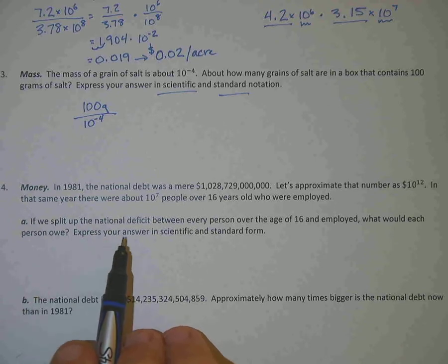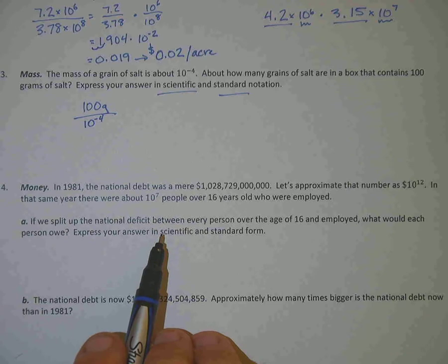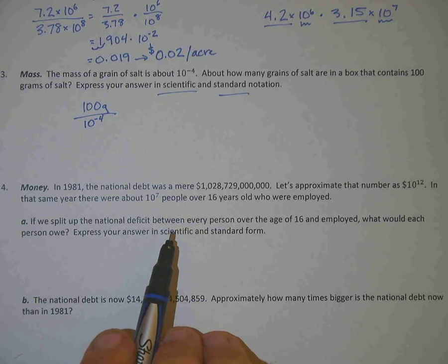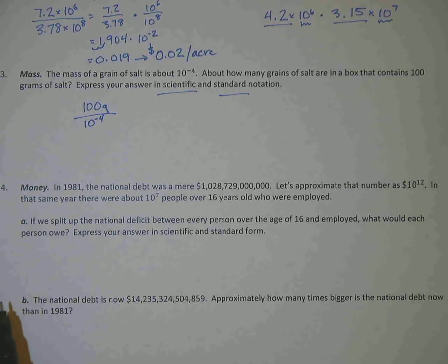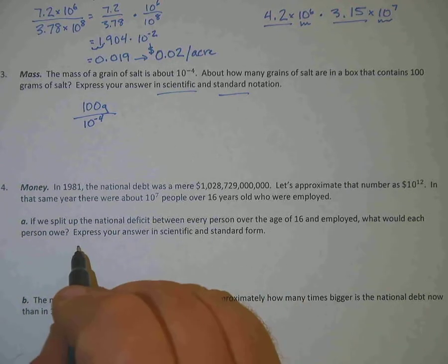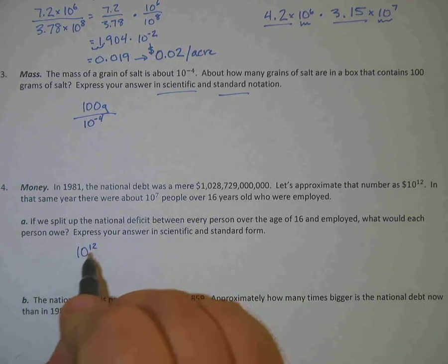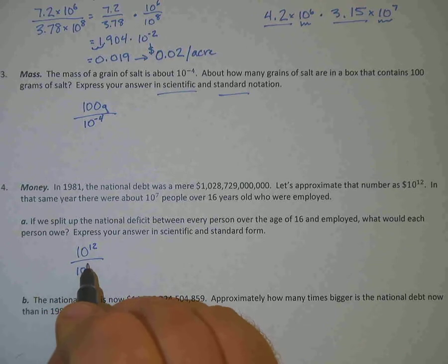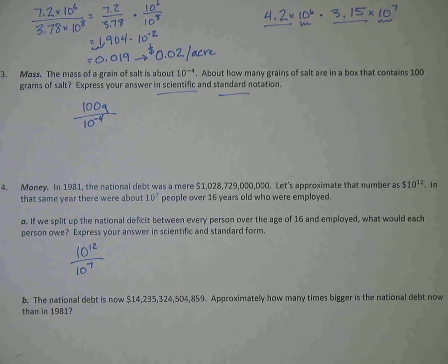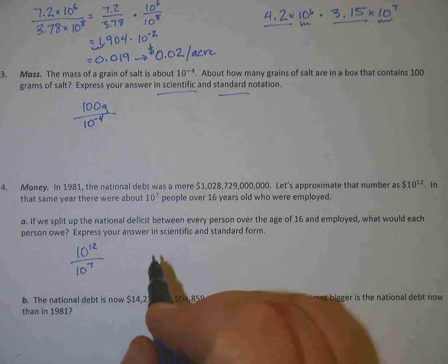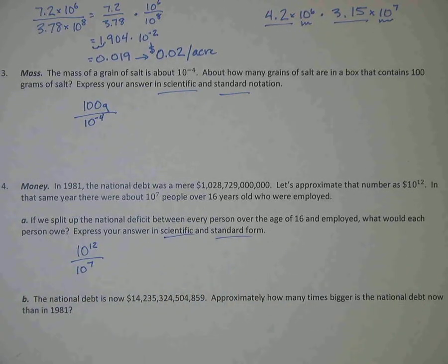If we split up the national deficit between every person over the age of 16 and employed, what would each person owe? So you're going to look at the 10 to the 12th over 10 to the 7th. And so you're going to want to simplify that and then give your answer in scientific and standard form.